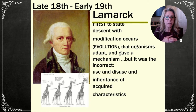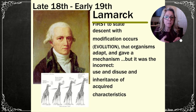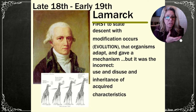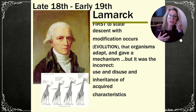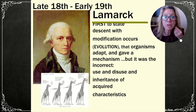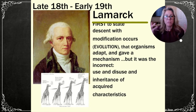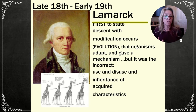Lamarck was the first to state descent with modification and offer a mechanism, but his mechanism was wrong. He believed in acquired characteristics: a giraffe stretches its neck throughout its lifetime, and offspring are born with slightly longer necks. Over generations, necks get longer and longer. This is use and disuse — if you used it, you kept it; if you didn't, you lost it.